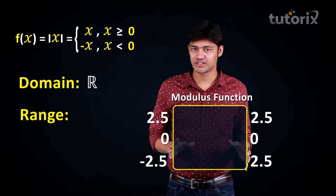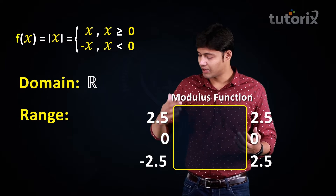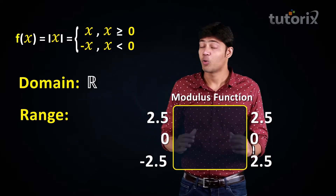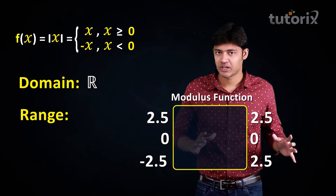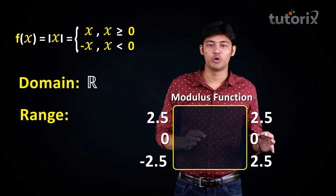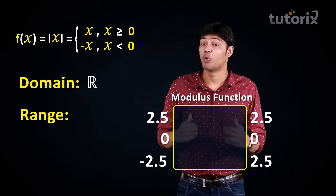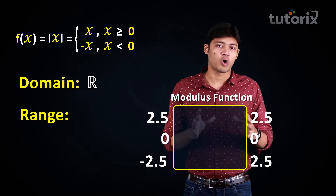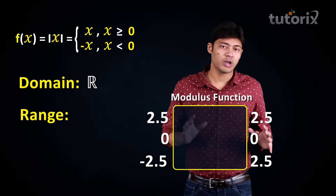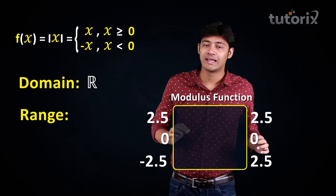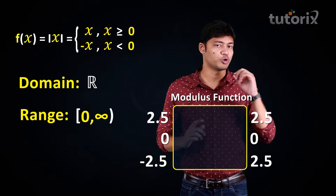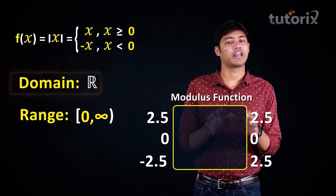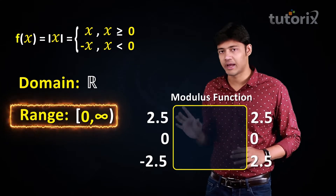To find the range, we look at all possible output values. When the input is zero, the output is zero. For all inputs other than zero, the outputs are always positive numbers — whether the input is positive or negative. So the output of the modulus function is always non-negative, meaning the range of the modulus function is the interval [0, ∞), closed at zero.